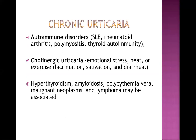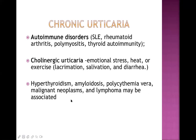For chronic urticaria, some autoimmune disorders may be responsible, including SLE, rheumatoid arthritis, polymyositis, and autoimmune thyroid disease like Hashimoto's thyroiditis. Cholinergic urticaria is associated with emotional stress, heat, or exercise involving the autonomic nervous system, and is associated with lacrimation, salivation, and diarrhea. Other associations include hyperthyroidism, amyloidosis, polycythemia vera, malignant neoplasms, and lymphoma.